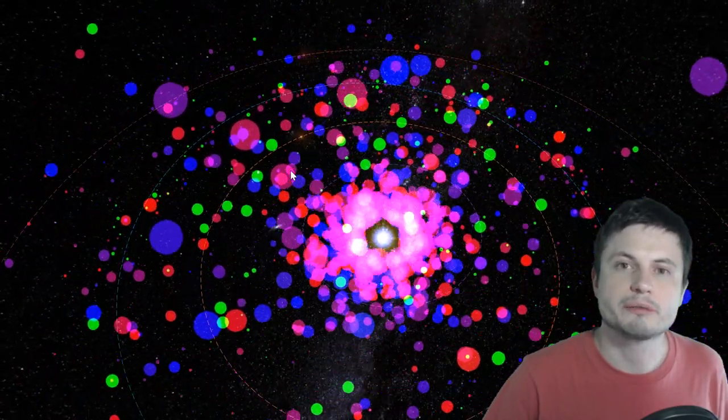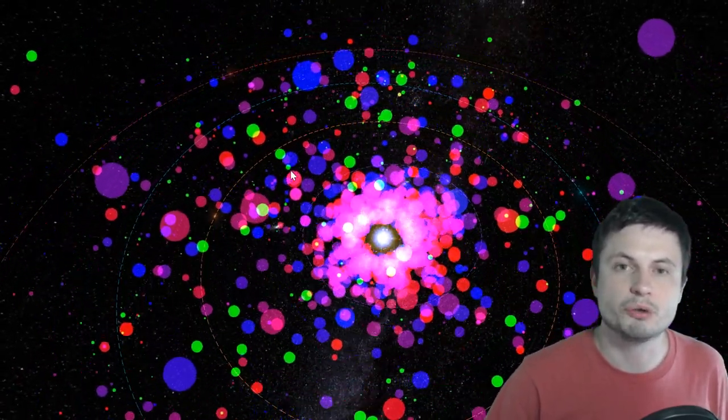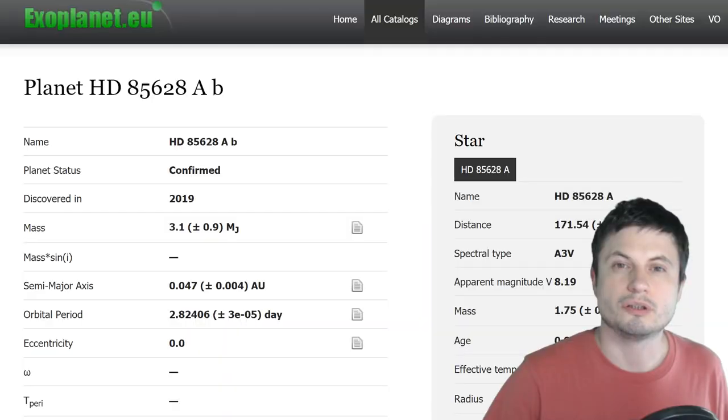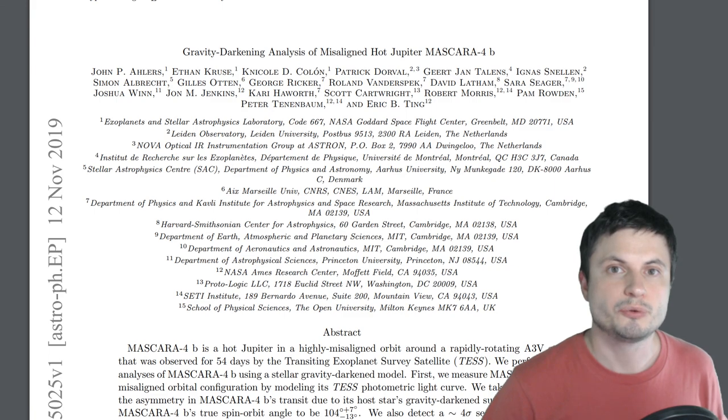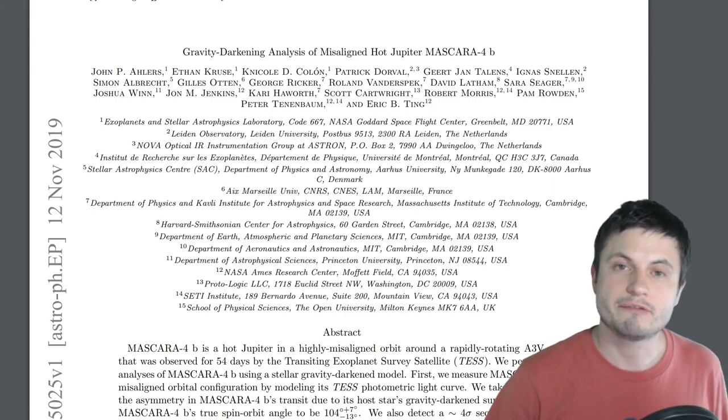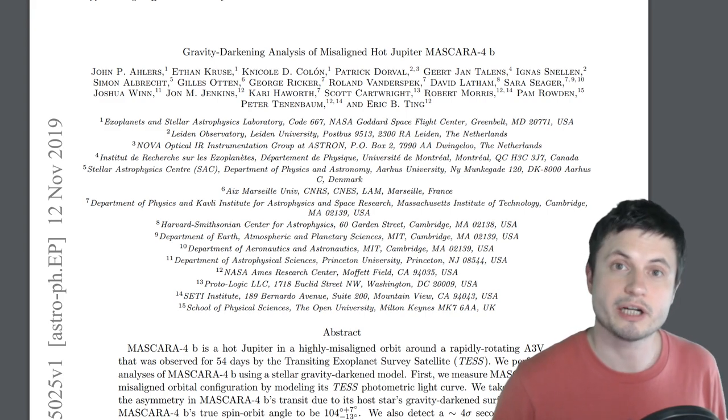But today we'll talk about this one specific planet known as Mascara 4b, also known as HD 85628b, and this exoplanet was discovered not so long ago, only a few weeks ago in late 2019, and it was discovered using a completely new but very interesting technique that we've never actually used before.